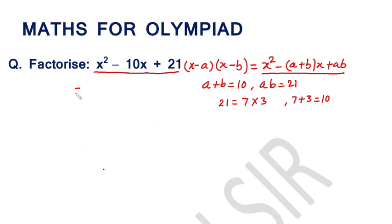Hence, this expression is equal to x² minus - we can write 3 plus 7 in place of 10 into x plus 3 into 7.